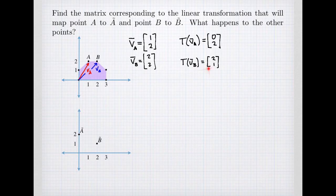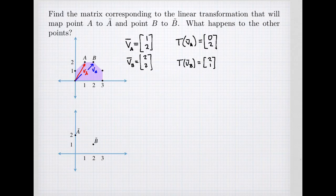Now we have all the basic information. We have two vectors that are linearly independent — we can see that they span all of R². We know the image associated with each of those vectors in our basis. We want to find the overall linear transformation. We'll interpret this information in the language of a matrix, starting by thinking of vectors VA and VB as a basis.